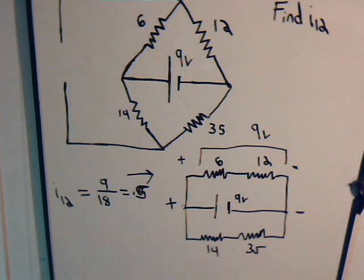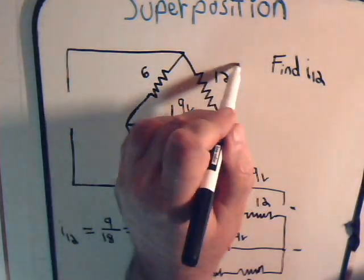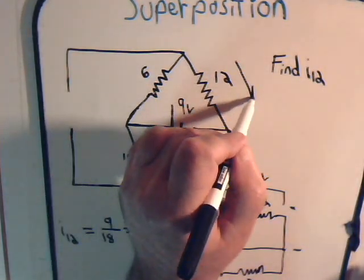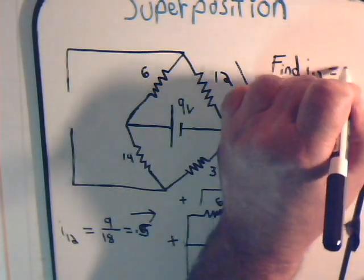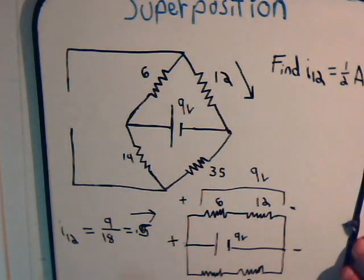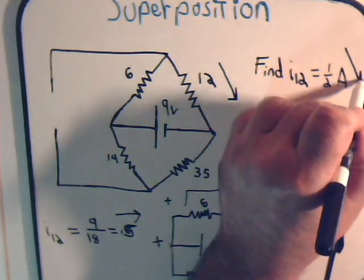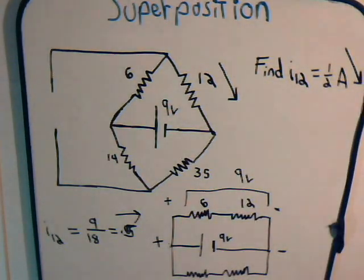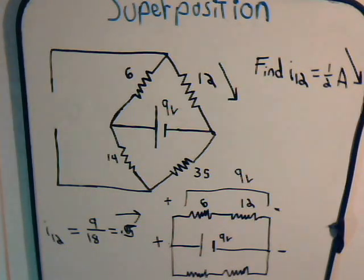So from the voltage source, it is going like this, and that's giving us one half amp in this direction. Now, let's determine what is the voltage that flows through this resistor resulting from the current source.